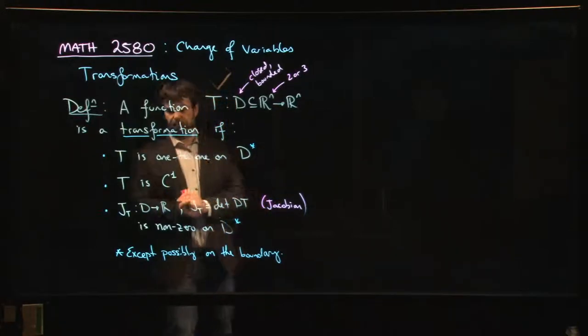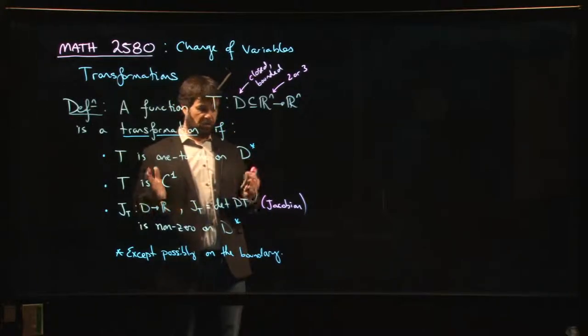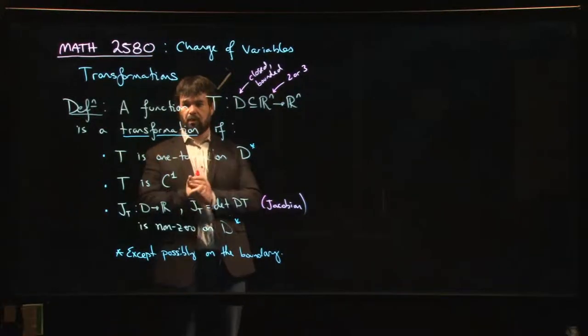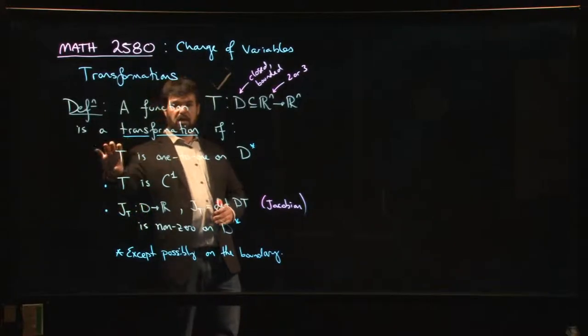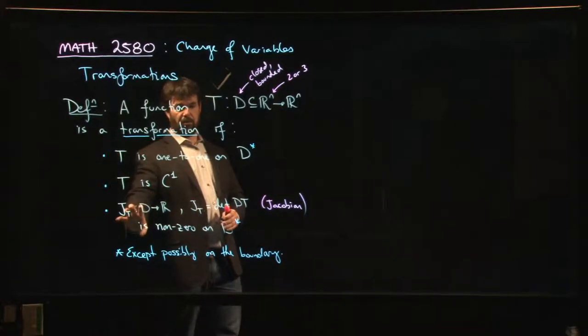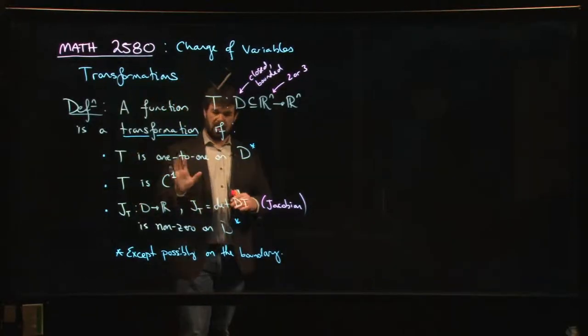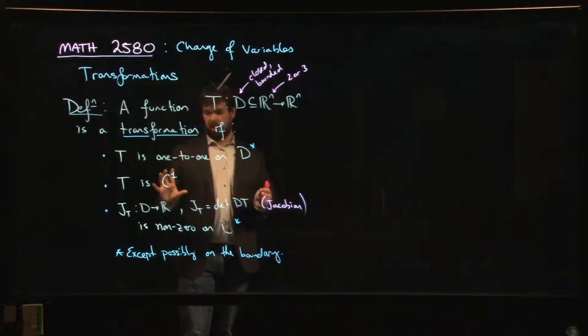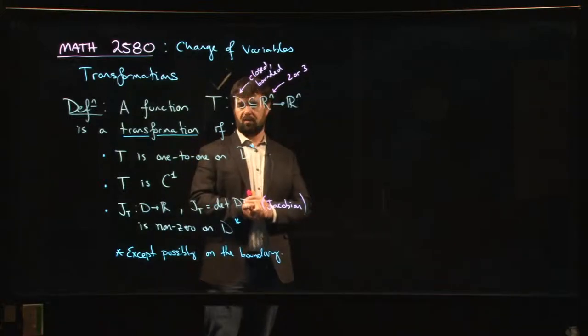Which is essentially, if you think back to your linear algebra for a second, remember that if you ask for the determinant of a square matrix to be non-zero, you're essentially requiring that that matrix has to be invertible. So if you think of the derivative of a transformation as a linear transformation, the linear function that approximates the original transformation, this requirement here is saying that not only does the original transformation have to be one-to-one, but also the linear part of that transformation.